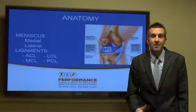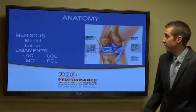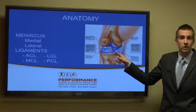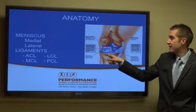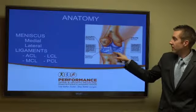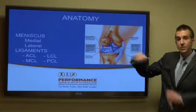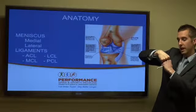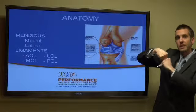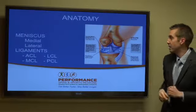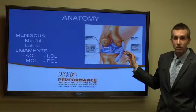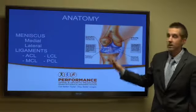Looking at the meniscus and the ligament structures of the knee: the meniscus is the cartilage that lines the top of the tibia bone. You also have your ACL, which keeps the thigh bone and the tibia in line and prevents any anterior translation of the tibia on the femur. You also have your MCL, medial collateral ligament, and your LCL.